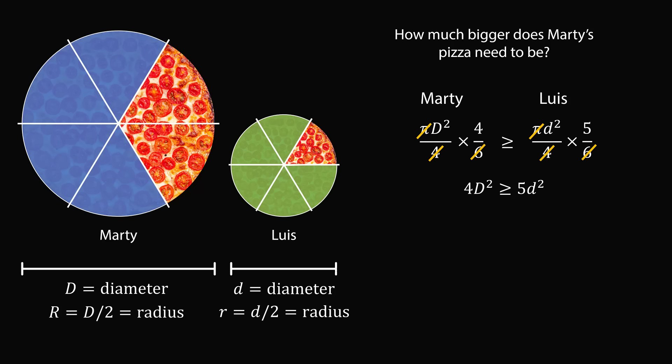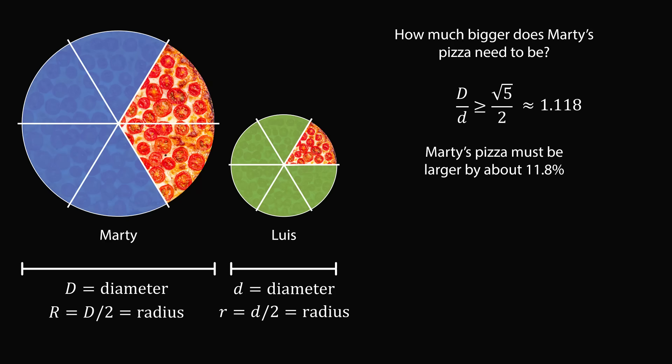We can divide both sides by little d squared and by 4 to get the following inequality. And then we just need to take the square root of both sides. Since all variables we are dealing with are non-negative, we can safely take the square root of both sides. So we have the ratio of diameters must be greater than or equal to square root of 5 divided by 2. So what does that mean in practical terms? Square root of 5 divided by 2 is approximately equal to 1.118. That means Marty's pizza must be larger by about 11.8%.